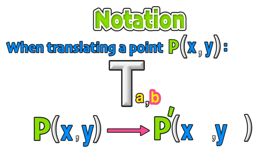Notice that the a and b values correspond with the x and y coordinates of the point P as it's translated to P prime. By applying these values, we can find the coordinates of the image P prime.